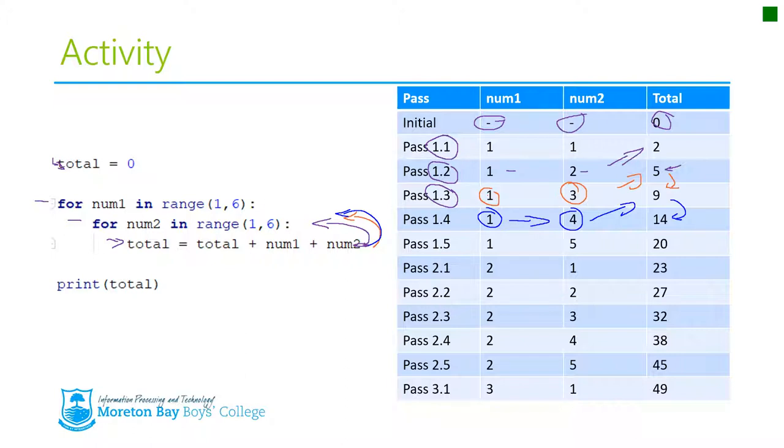Anyhow, so once we've done that, we've now come back up here, and because num2 is 5, it hits this, exit out of this loop, exit out of this loop, and goes back up to the next loop, in which num1 will increase up to 2. Nice arrow there.